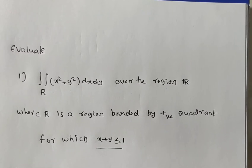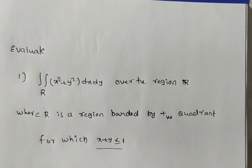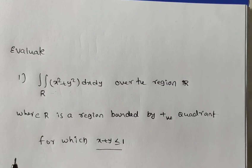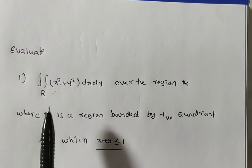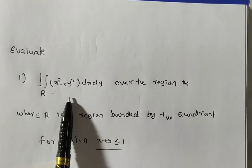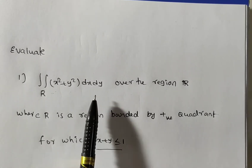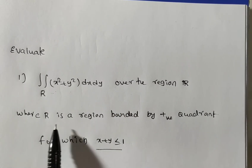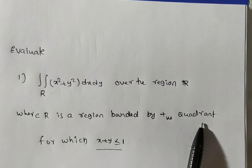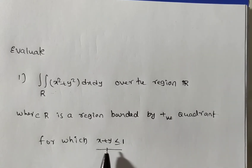Hi friends, welcome back to team education. Now we are solving the problem on multiple integrals. The given problem is double integral over R of x square plus y square into dx dy, where R is a region bounded by the positive quadrant for which x plus y less than or equal to 1.